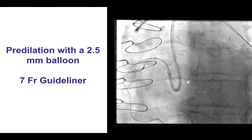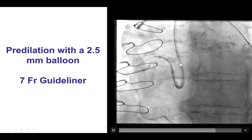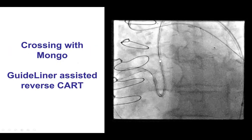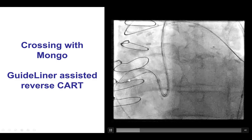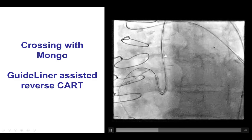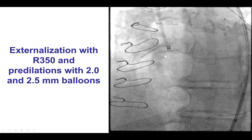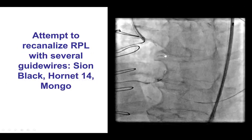We then pre-dilated, inserted a guide extension, and performed the GuideLiner-assisted reverse CART, advancing the retrograde guidewire into the antegrade guide extension. We externalized an R350 and pre-dilated the entire right coronary artery with various balloons.